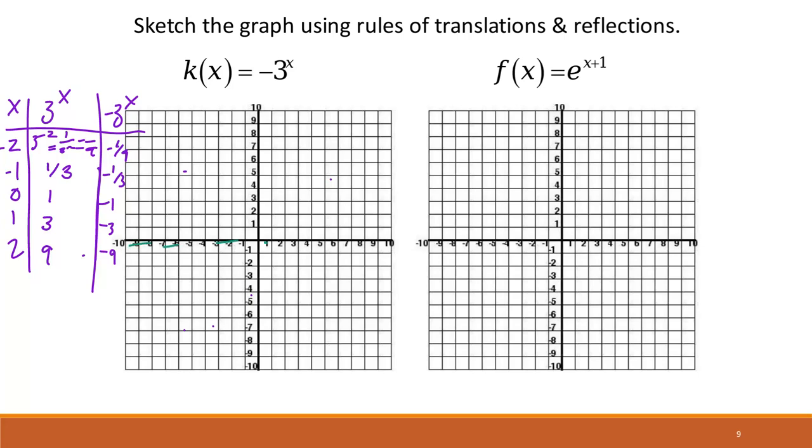So our asymptote here, because we didn't have a move upward or downwards, it's going to still be at 0. So then we can plot our points we do know. So I'm going to plot 0, 1, or I mean 0, negative 1.